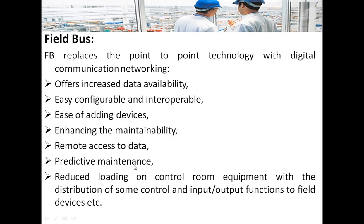These are the advantages of fieldbus over a conventional 4 to 20 milliampere point-to-point interface. Fieldbus devices offer increased data availability, are easily configurable, and are interoperable — meaning devices from different manufacturers are compatible with each other. The fieldbus supporting network makes it easy to add new devices and also enhances the maintainability of the system. Remote access to data, remote maintenance, and it also reduces the load on control room equipment through the distribution of control to field devices. For example, in Foundation Fieldbus, the PID block can be incorporated in field sensors or actuators, reducing the load on the control system.